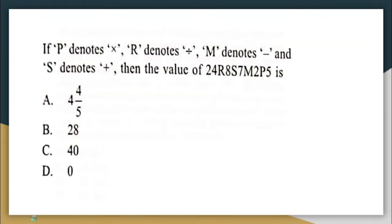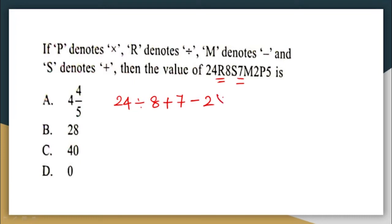Next question. If P denotes multiplication, R denotes divided by, M denotes subtraction and S denotes addition, then find the value of 24 R 8 S 7 M 2 P 5. Just put in the correct symbols as per the given letters: R means divided by, S means addition, M means subtraction, and P means multiplication. So this becomes: 24 ÷ 8 + 7 − 2 × 5.